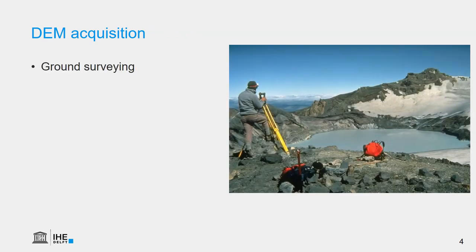So how do we acquire DEMs? The traditional way is using ground surveying, where we extrapolate from a known XYZ point to other locations and accurately measure the position using a theodolite. This requires very skilled people and is also very laborious to cover a large area, especially in mountains, as you can see in the picture. In the end, all these points need to be interpolated if we want to use them as a continuous raster in, for example, hydrological modeling.